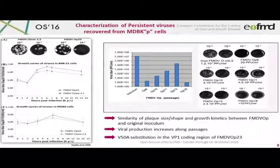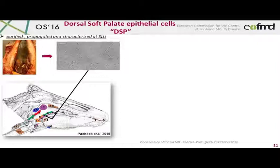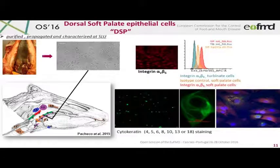We also observed a mutation in the VP1 coding region at passage 23 after inoculation — a substitution in VP1 to be further investigated. In the framework of the European project TranscriptoVac, we had the opportunity to collaborate with Jean-François Valarcher and Sarah at SLU in Sweden, working on primary bovine epithelial cells. These are dorsal soft palate epithelial cells, which I will call DSP in this presentation.